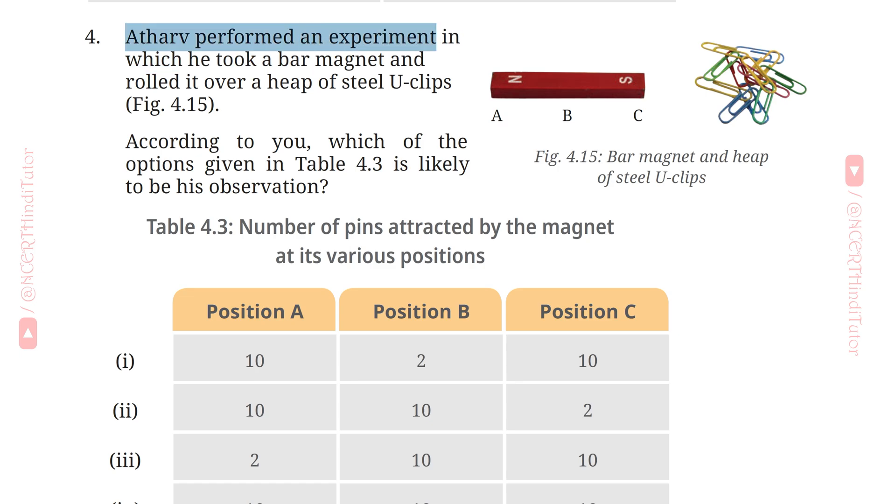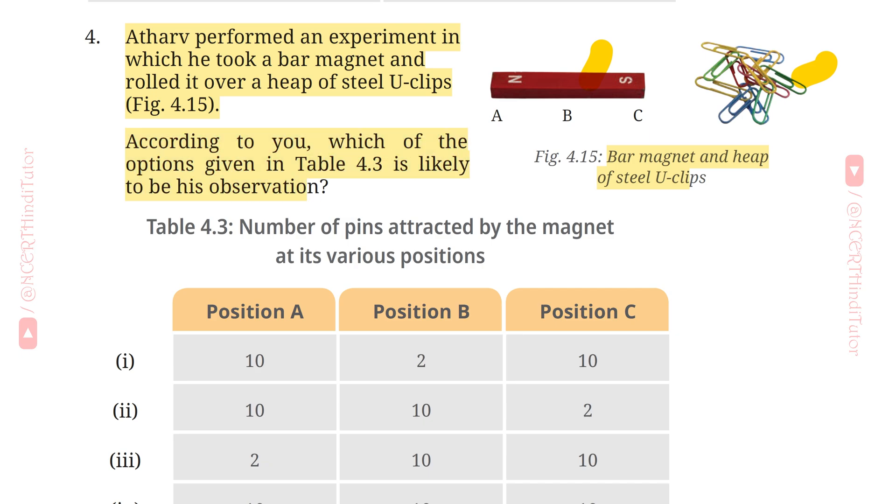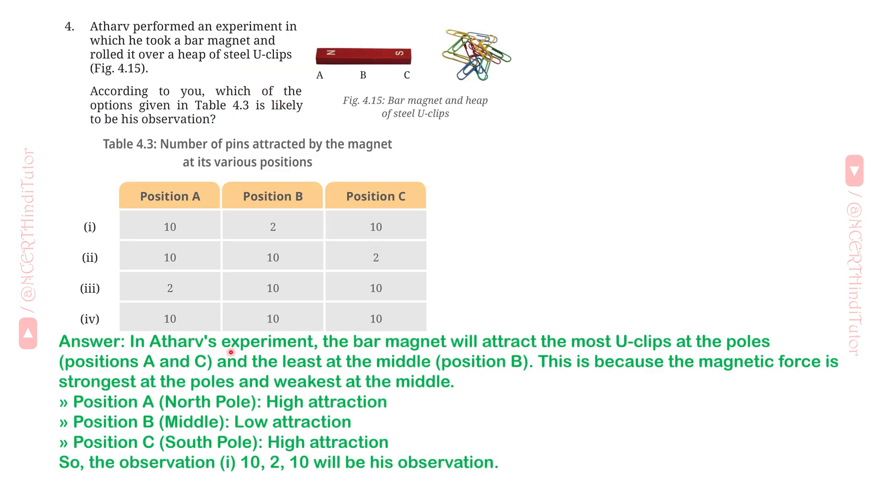Question 4: Atharv performed an experiment in which he took a bar magnet and rolled it over a heap of steel U-clips. Figure 4.15 shows the bar magnet and heap of steel U-clips. According to you, which of the options given in table 4.3 is likely to be his observation? Table 4.3: Number of pins attracted by the magnet at its various positions.